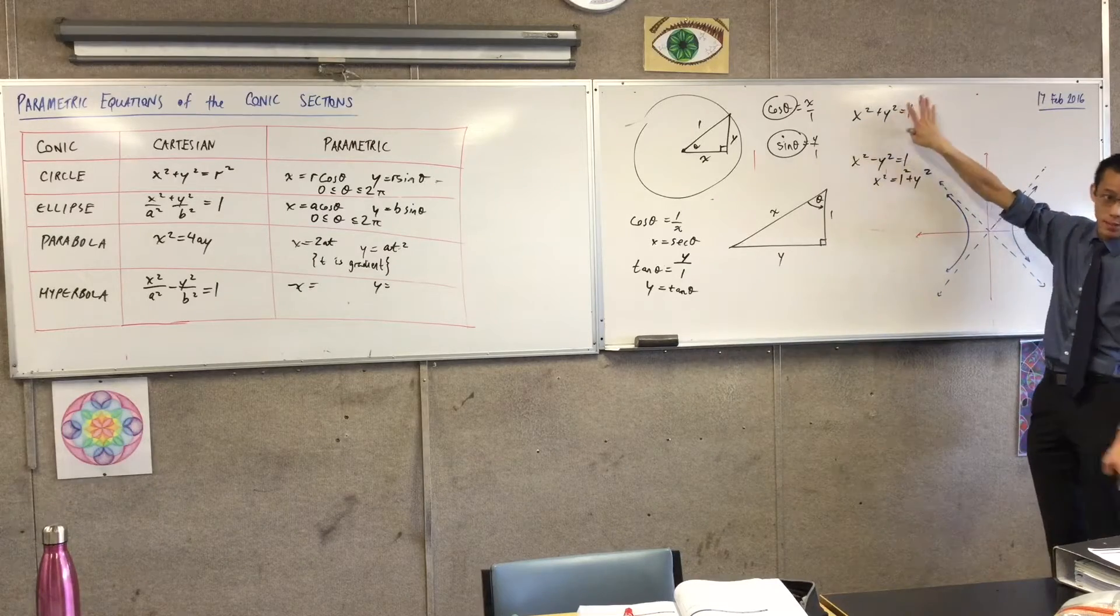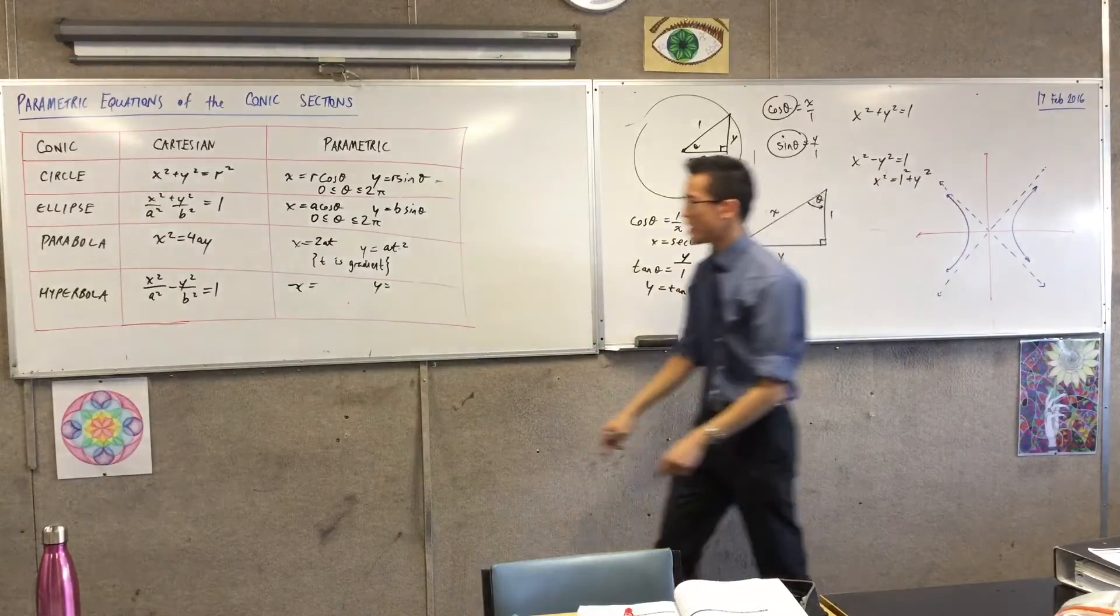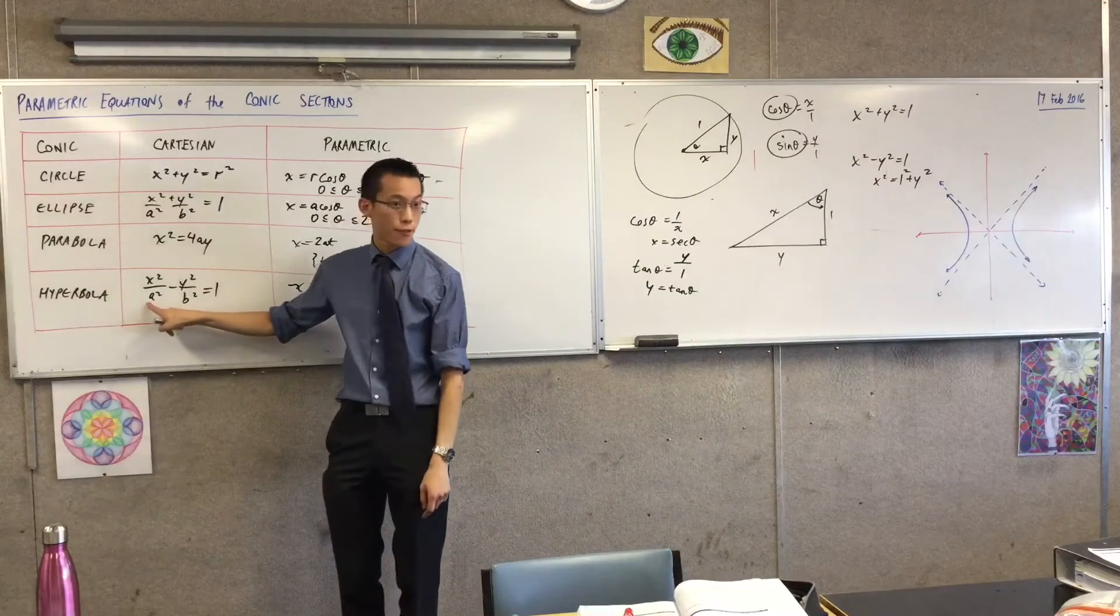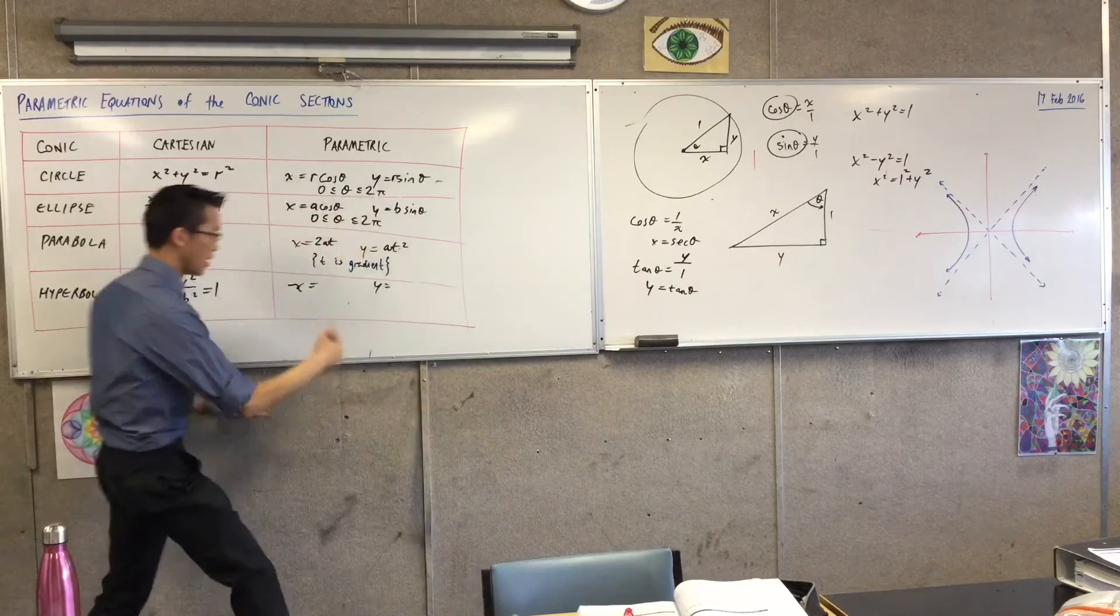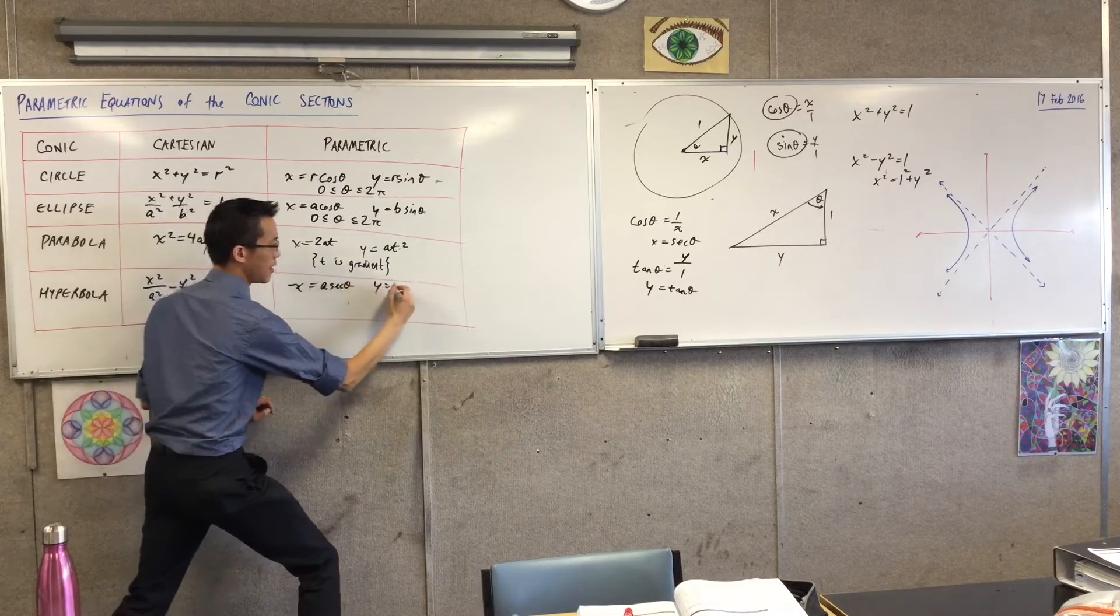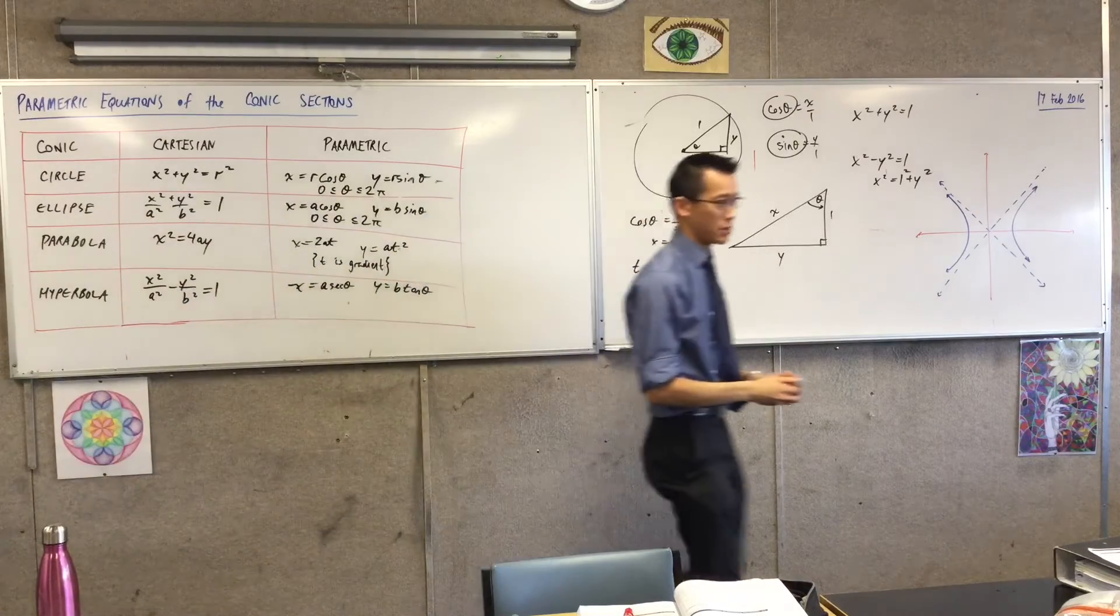Just like we saw before with this one, the simpler version. All I need to do to get it over here is to say, well, I need to scale it by this amount for x, and I need to scale it by that amount for y. Does that make sense? So I'm going to have a sec theta and b tan theta as my parametric equations.